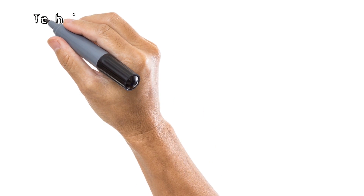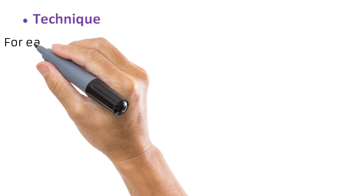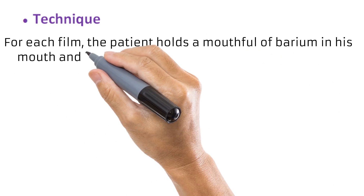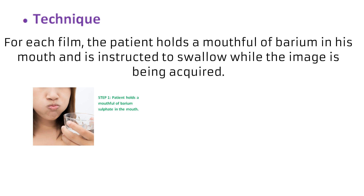As for the technique, for each image acquired after the preliminary films, the patient holds a mouthful of barium in the mouth and will be told to swallow while the image is being acquired. This way, the image will be acquired with barium in the esophagus. Here you can see the patient holding the liquid in her mouth, and here you see the patient swallowing — it is at this point that the image is acquired.